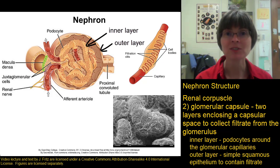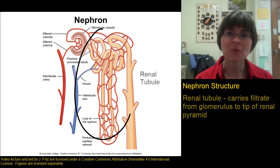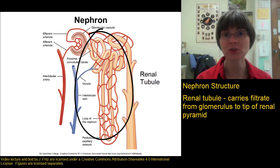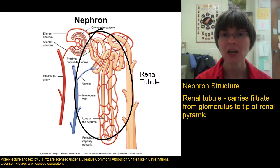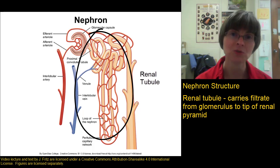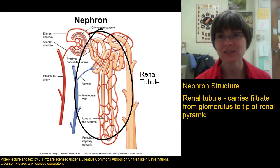The capsular space, which collects the filtrate, empties into the renal tubule. The renal tubule is a long tube that carries the filtrate from the glomerular capsule all the way to the tip of the renal pyramid, where it empties urine into a minor calyx, then into a major calyx, into the renal pelvis, into the ureter, etc.